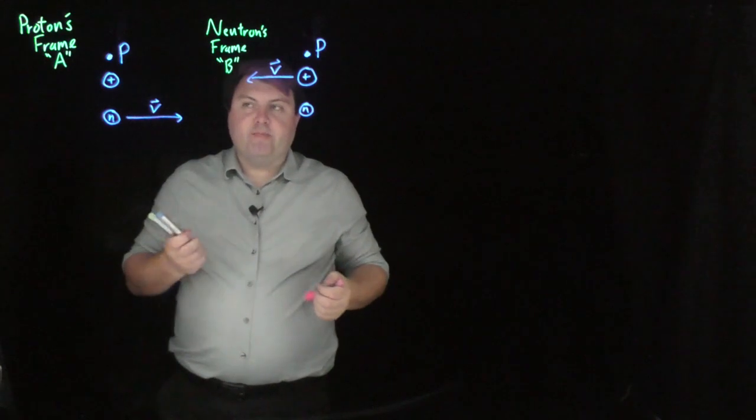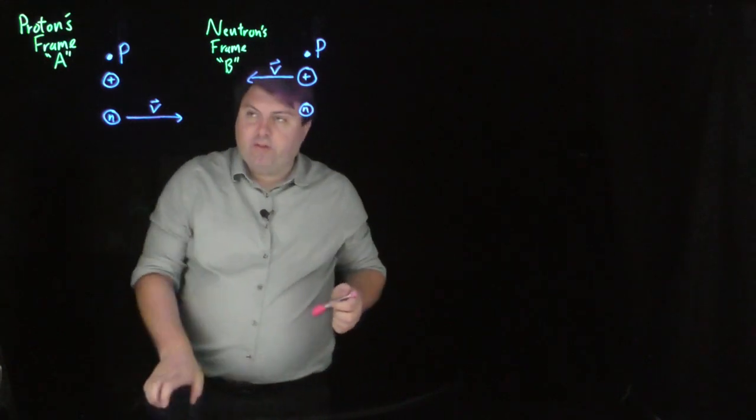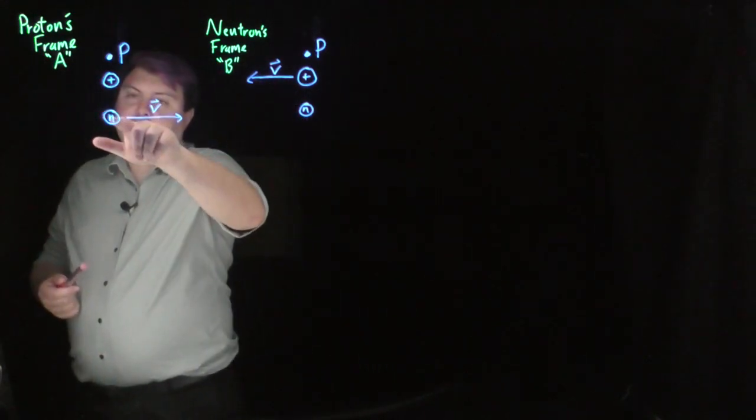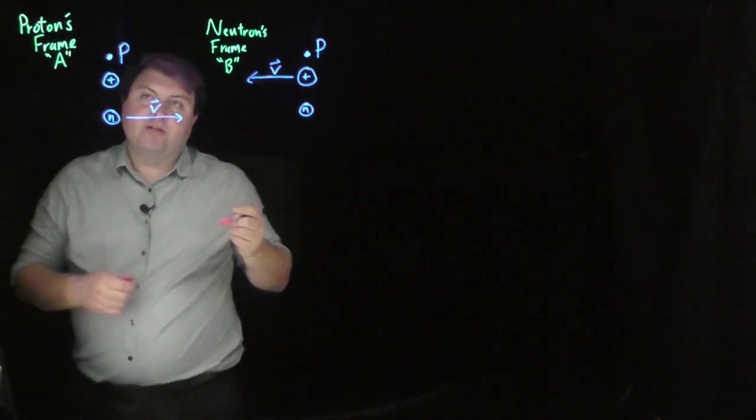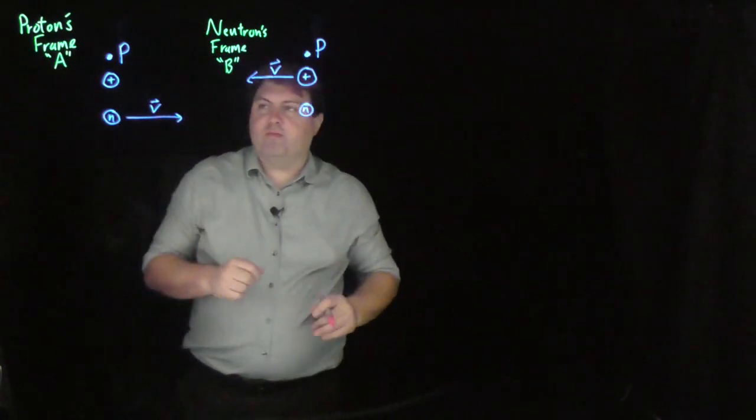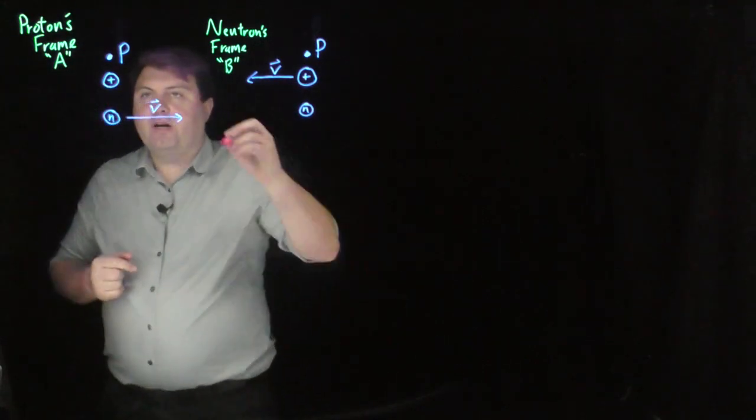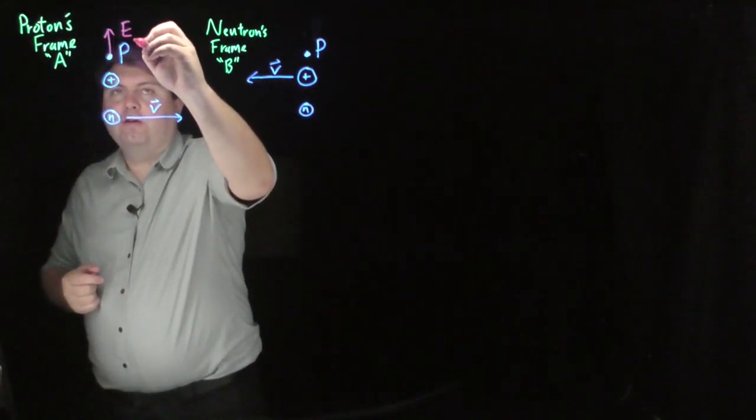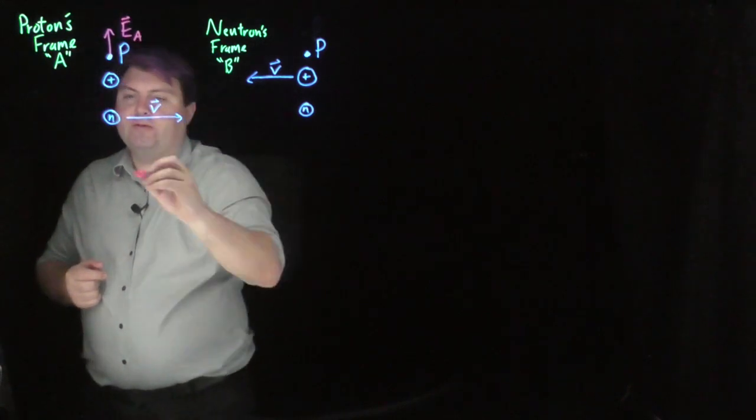So we can calculate electric and magnetic fields here. We only have to worry about the field from the proton because the neutron has no charge. The neutron essentially is just an observer to kind of help us understand the frames. So here from the proton we have an electric field,